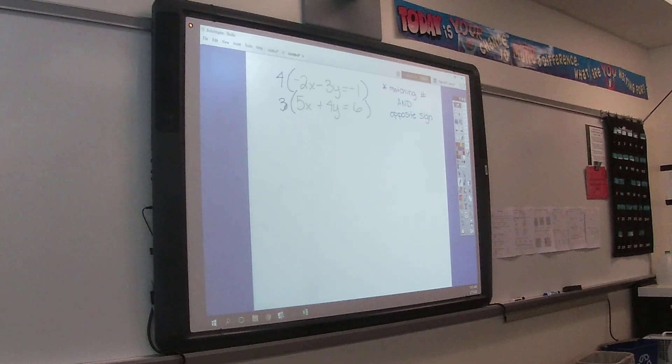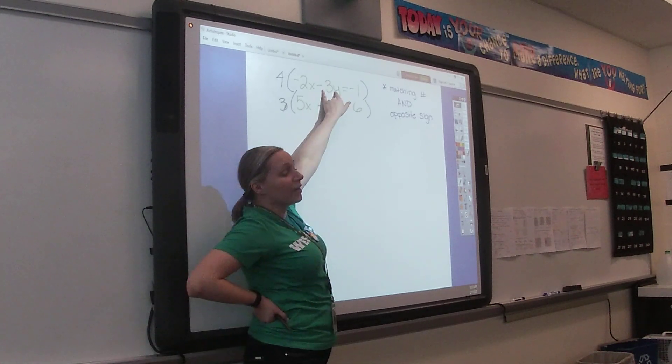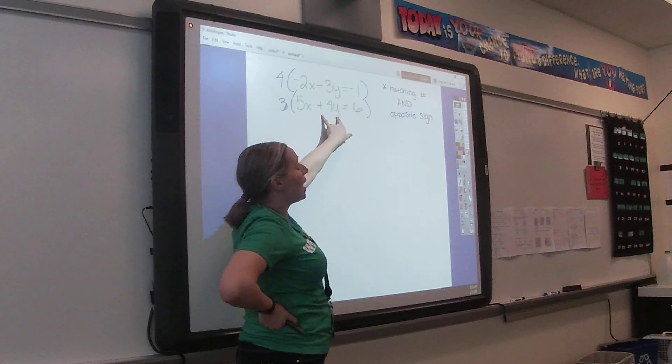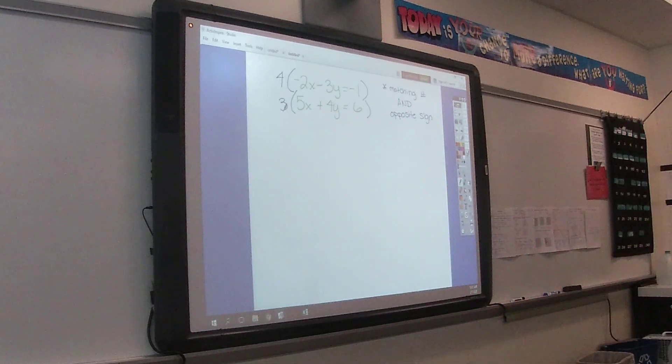So you want to get rid of the Ys. If we want to get rid of the Ys, do the Ys have a matching number in front? No. So we said we could multiply. We could bring this 3 down and this 4 up or multiply by anything that makes them become a matching number. Then we want to check the signs. They're already the opposite sign, which is what we want, so we don't need to do anything else.